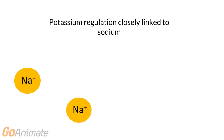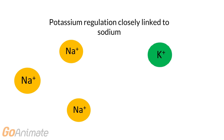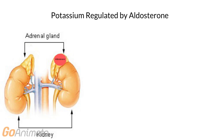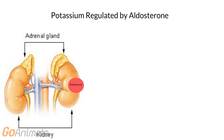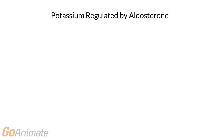Potassium and sodium regulation are closely linked. Aldosterone helps to regulate potassium. Aldosterone is secreted by the adrenal glands and targets the kidneys. The adrenal cortex secretes aldosterone in response to an increase in plasma potassium concentration, as well as angiotensin II, which results from activation of the renin-angiotensin system.